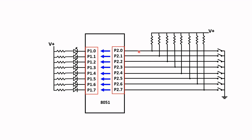Let's look at the resistor and switch interface. P2.0, which is Port 2 bit 0, is connected to one end of a resistor and the other end is connected to the positive supply. This point is also connected to an open switch. With this arrangement, this pin is at logic 1 because it's plus volts, and this is the same for all pins because all switches are in the open position — so they are all at logic 1.